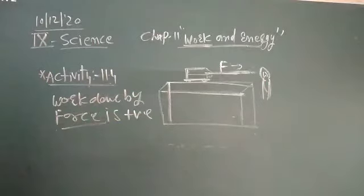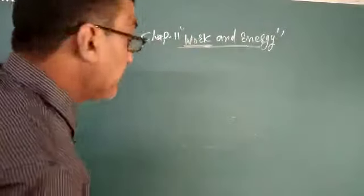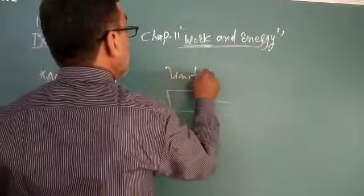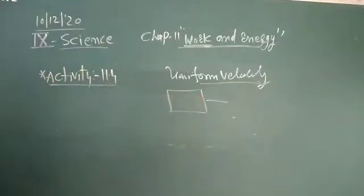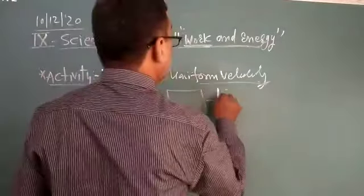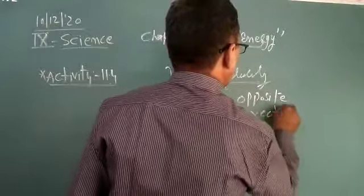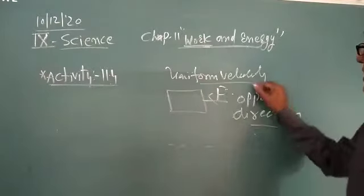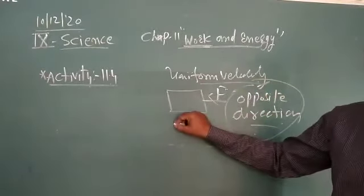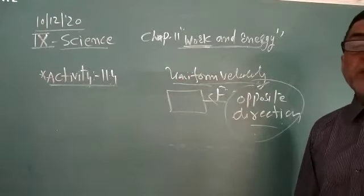But suppose we consider a situation. Suppose an object is moving with uniform velocity, and when we apply the force in the opposite direction, the displacement is negative. You know that it becomes steady position. Finally it will be stopped. At that time, we can consider the work is negative.